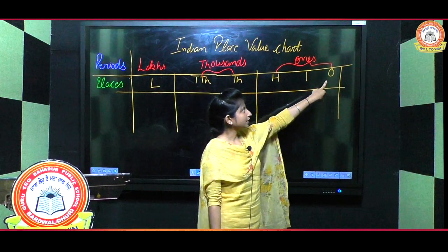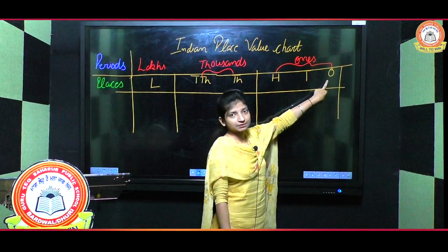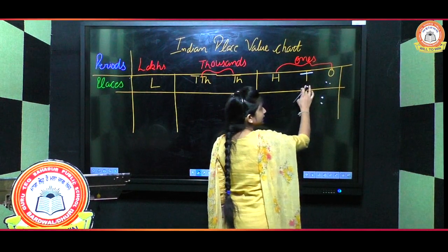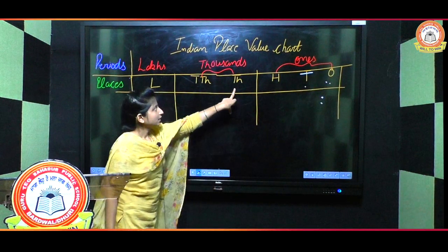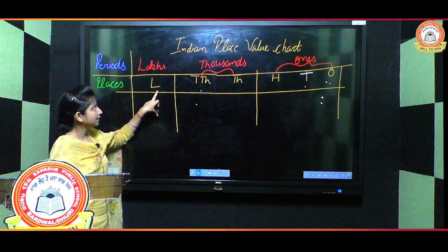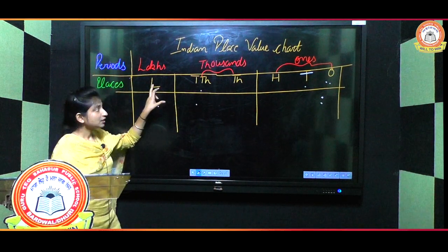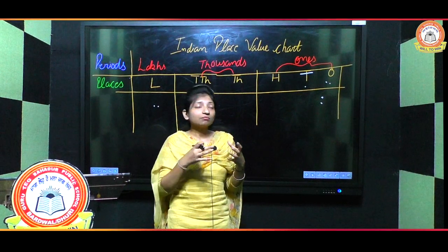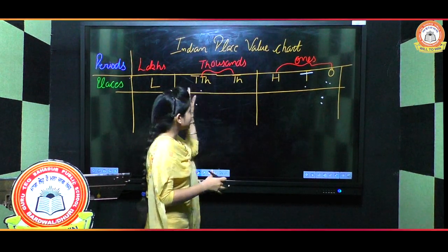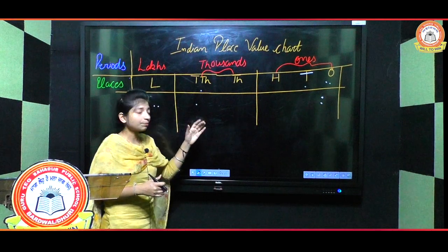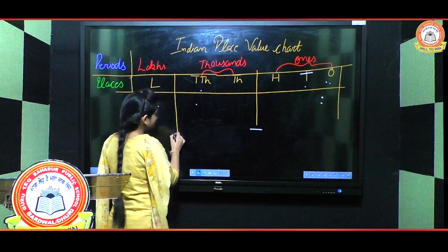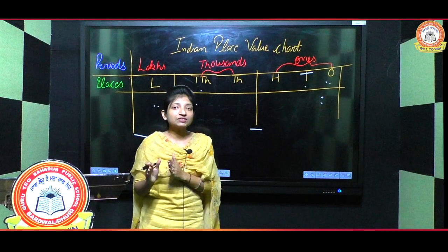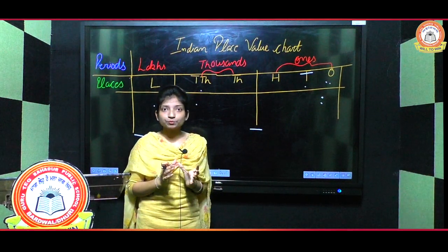First of all I have written the places. Place values start from ones, tens, hundred, thousand, ten thousand, lakh. Now you must be wondering — why are these lines separating the chart? These lines separate the place values into periods, into groups.